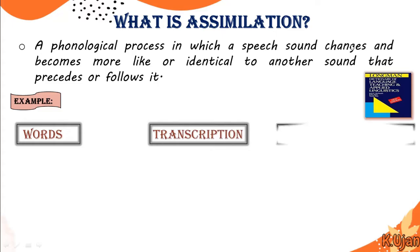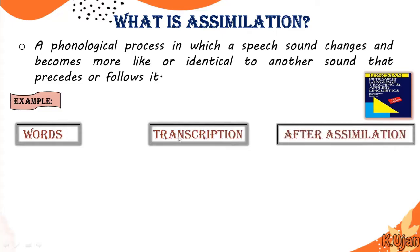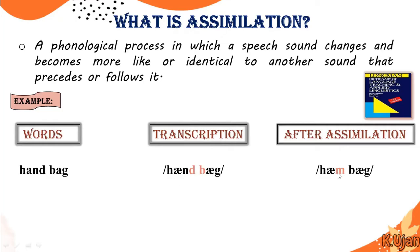We are going to look at word examples, their transcription, and how they change after assimilation. For example, the word 'handbag' — its pronunciation is /hændbæg/ — but after assimilation in connected speech it becomes /hæmbæg/. This type of sound change is known as assimilation.